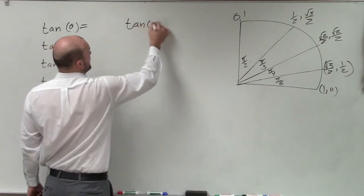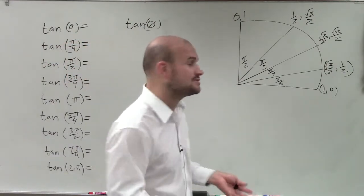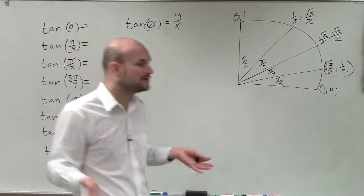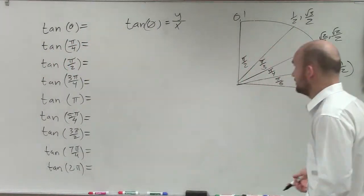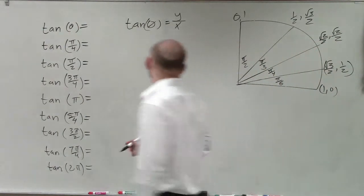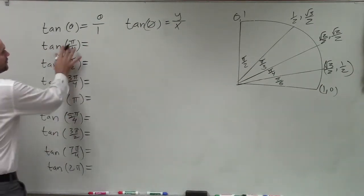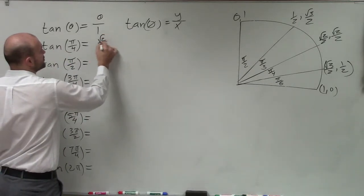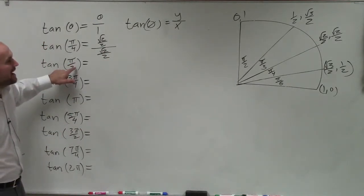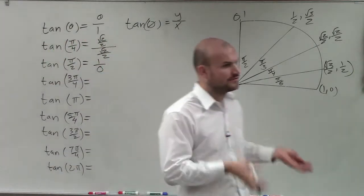The first thing we need to understand is when we have the tangent of theta for an angle that intersects a point on the unit circle, tangent represents the y coordinate over the x coordinate. So the tangent of 0 is going to be 0 over 1 — that's the y coordinate over the x coordinate. For tangent of pi over 4, that's square root of 2 over 2 divided by square root of 2 over 2. The tangent of pi halves is 1 over 0. I'm just taking the y coordinate over the x coordinate.